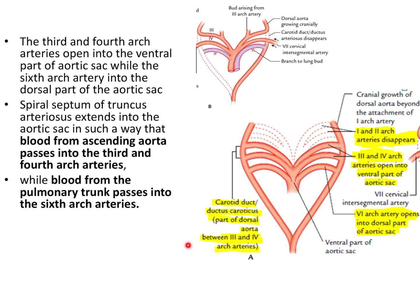The third and fourth arch arteries open into the ventral part of the aortic sac, while the sixth pharyngeal arch artery opens into the dorsal part of the aortic sac. The spiral septum divides the aortic sac such that blood from the ascending aorta passes into the third and fourth pharyngeal arch arteries, and blood from the pulmonary trunk passes into the sixth arch artery. The part of the dorsal aorta between the third and fourth pharyngeal arch arteries is called the ductus caroticus, or carotid duct, which will degenerate later.